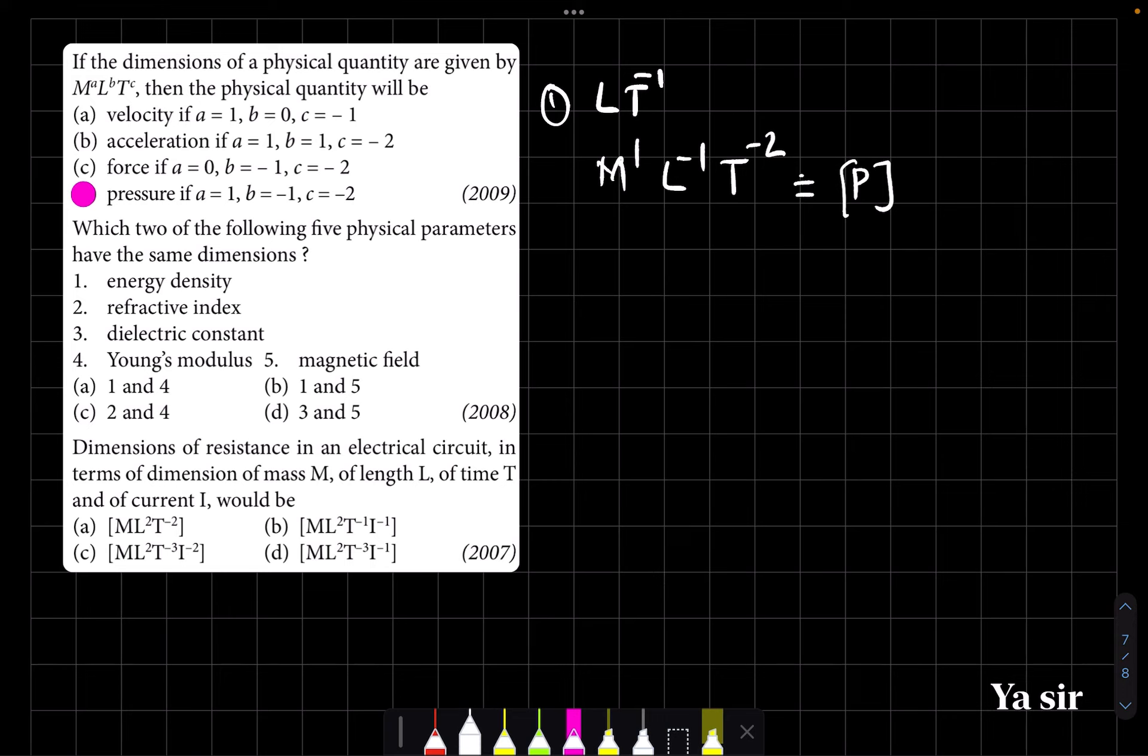Which of the following five physical parameters have the same dimensions? Energy density. Just in the previous video, we explained what is energy density. Energy density, same dimension as refractive index, dielectric constant, Young's modulus, magnetic field. So the correct answer: energy density and Young's modulus. Correct.